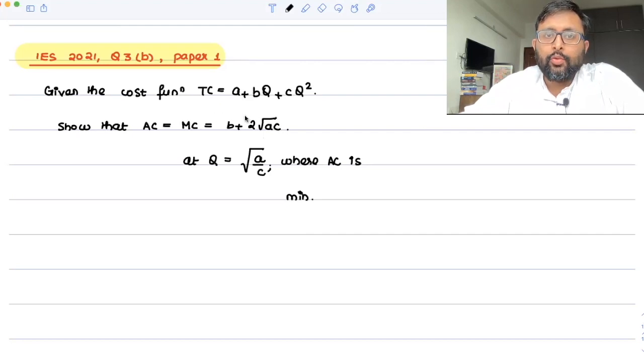Given the cost function TC = a + bq + cq², show that AC = MC = b + 2√(ac) at q = √(a/c). This is very simple. Let's have a look at this. How do you go about this problem?